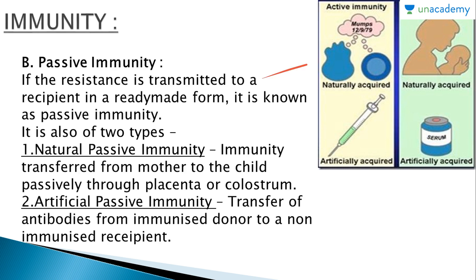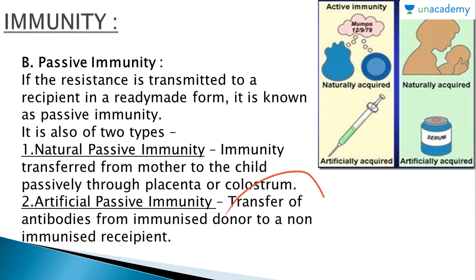Passive immunity is also of two types: natural passive immunity and artificial passive immunity. Natural passive immunity is immunity transferred from mother to child passively through the placenta — when the child is in embryo form connected to the mother — or through colostrum, which is the first milk the mother provides to the child. Artificial passive immunity involves the transfer of antibodies from an immunized donor to a non-immunized recipient — antibodies are collected from the blood serum of an immunized patient and transferred to the non-immune recipient.